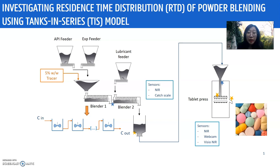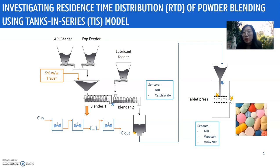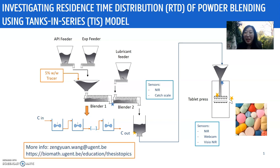We also run the blender under different operating conditions, such as different screw speeds and different throughputs, so we can link the parameters of the model to the process settings and also to different material properties.